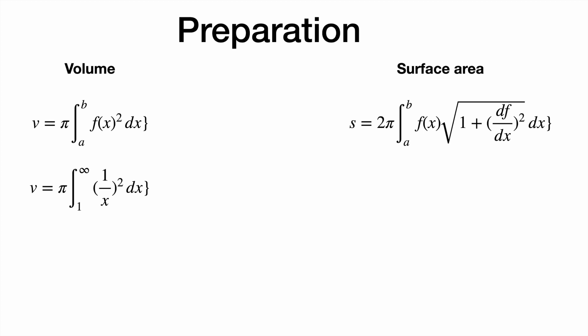And by plugging in the values necessary, we get 2 pi times the integral of 1 over x times the square root of 1 plus the derivative squared, from 1 to infinity.